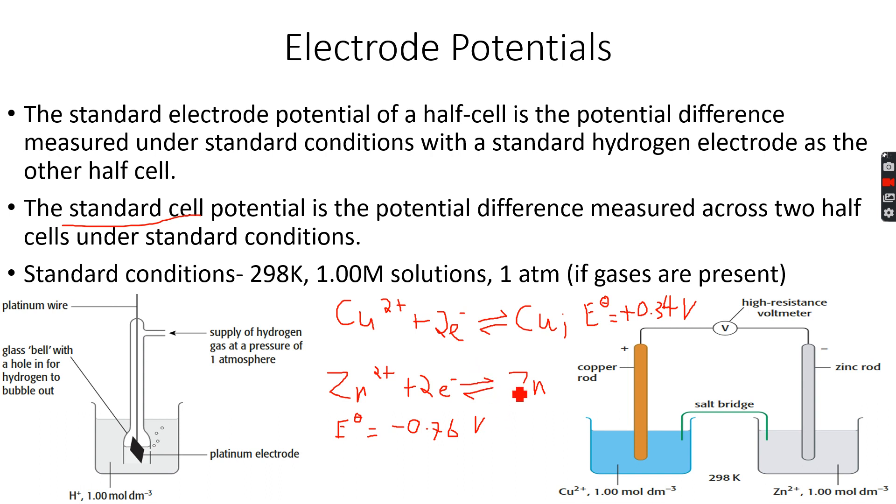This means that zinc is oxidized more readily than Zn2+ is reduced. On the other hand, Cu2+ is reduced more readily than copper is oxidized.